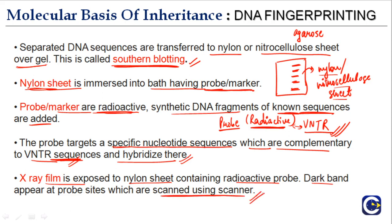An X-ray film is then exposed to the nylon sheet containing the radioactive probe, and dark bands appear at the probe sites, which are scanned using a scanner. This allows you to see whether a particular DNA sequence is present or not.